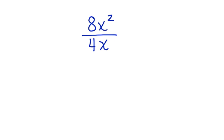Here we have 8x squared divided by 4x. We simplify the coefficients separate from the variables. 4 goes into 8 twice.